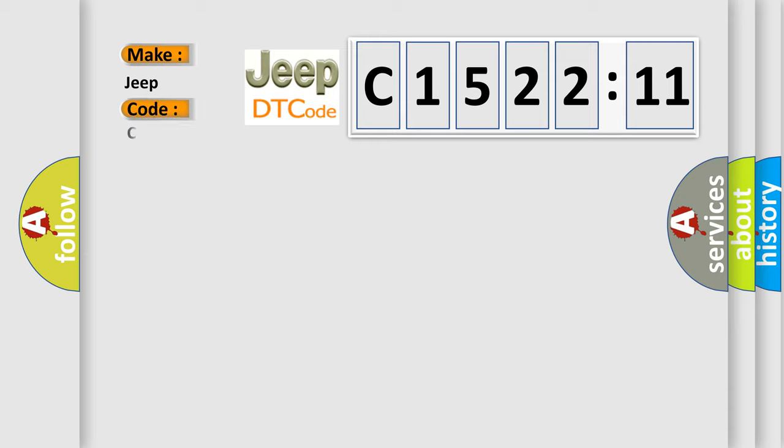So, what does the Diagnostic Trouble Code C152211 interpret specifically for Jeep car manufacturers? The basic definition is H02S21 bank 2 sensor 1 slow response.